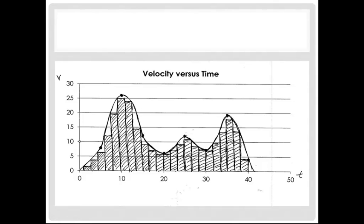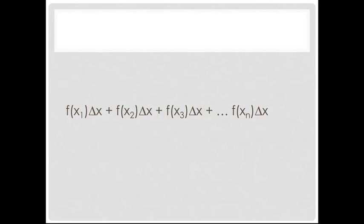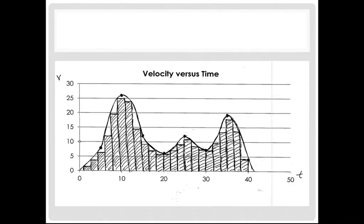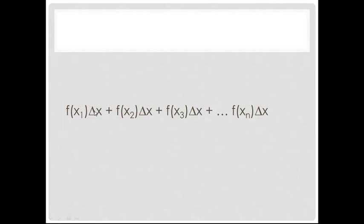Another way to put the area of the sum, the sum of the areas of all these teeny triangles, this is one way to put it. So let's say that we divide up this amount of time, say from 0 to 42, by 2 second intervals. Well, then delta x is going to be basically 2 seconds each.